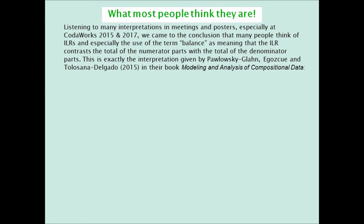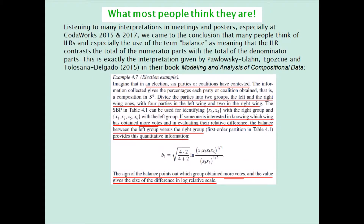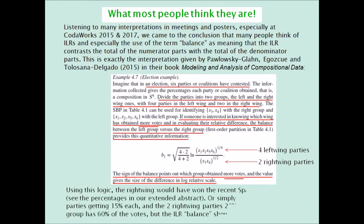This type of interpretation is precisely the one that Pawlowsky-Glahn and co-authors give in their 2015 book, in an example about voting percentages in an election. They show an ILR balance between four left-wing parties and two right-wing parties and say, and I quote: 'If someone is interested in knowing which wing has obtained more votes and in evaluating their relative difference, the balance between the left group versus the right group provides this quantitative information. The sign of the balance points out which group obtained more votes, and the value gives the size of the difference in log-relative scale.' Now, using this logic, in the recent Spanish elections the right-wing parties would have won. Taking a hypothetical 15% for each of the four left-wing parties and 20% for each of the two right-wing parties, it is clear that these authors' interpretation is not correct.